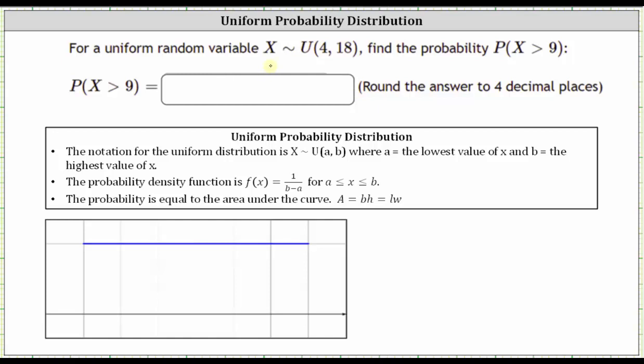We are given the random variable X has a uniform distribution with a minimum of four and a maximum of 18, and we're asked to find the probability that X is greater than nine.